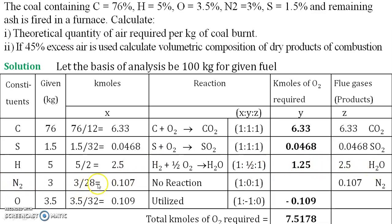Next is nitrogen. Nitrogen does not burn and will not react with oxygen; therefore, nitrogen requires no oxygen — the Y component is 0. However, whatever nitrogen is present in the fuel appears as-is in the products. The ratio is 1:0:1. So 0.107 kmol of nitrogen produces 0.107 kmol of nitrogen in the products.